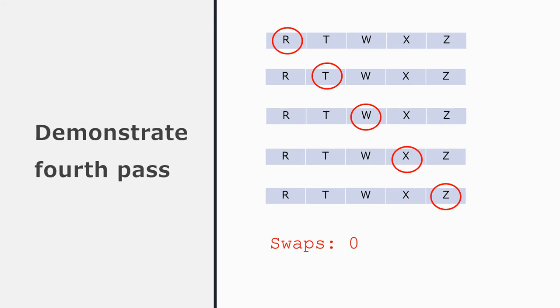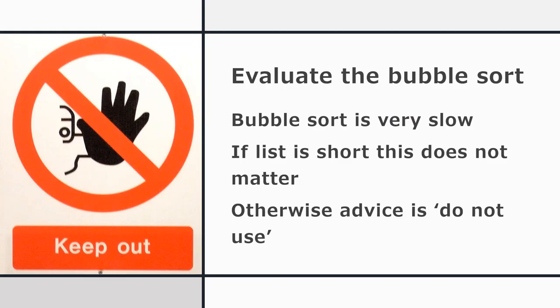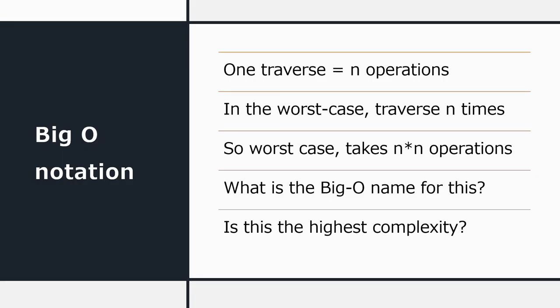That was quite a lot of work to sort a list of just five elements. The bubble sort is very slow — you have to keep going through the list over and over again. At computer speed with a short list, that isn't going to matter much as it'll be done in a fraction of a second. However, if we're working with a list with hundreds, thousands, or millions of elements, our advice would always be: do not use the bubble sort. It's slow, and we wouldn't use it except with a very short list.